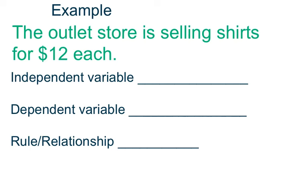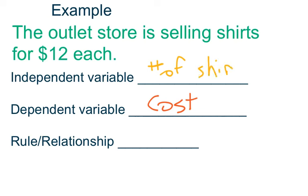Let's look at this example: the outlet store is selling shirts for $12 each. Anytime you purchase something, you have a couple things going on — you purchase a certain amount of items and it costs a certain amount of dollars. Those are two different variables. One is independent and one is dependent. The dependent variable depends on something else. The cost is the dependent variable because it depends on the number of shirts that you purchase.